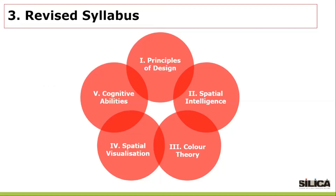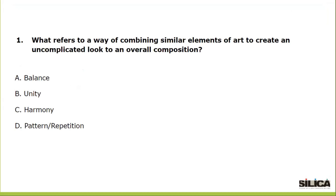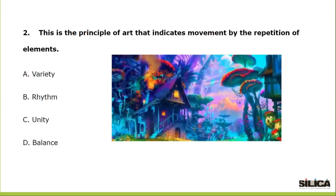Let's see what these topics are and what kind of questions could be asked. Principles of design can be summarised in five parts, starting with elements and principles of design. Remember, these principles of design work together to create something aesthetically pleasing and optimise the user experience. You could be asked to identify a principle of design through a description, or asked to identify a principle through a given image.